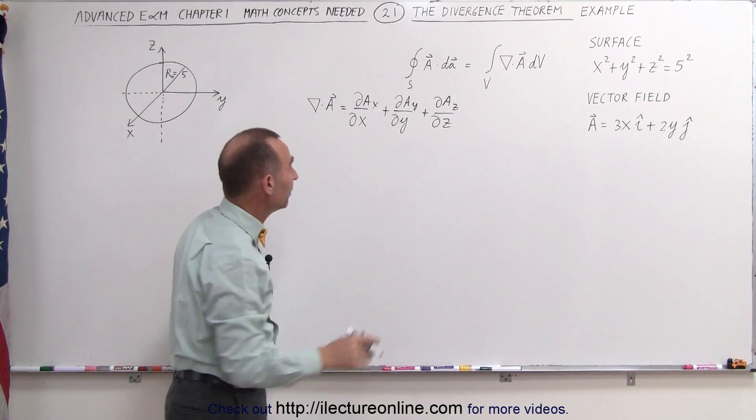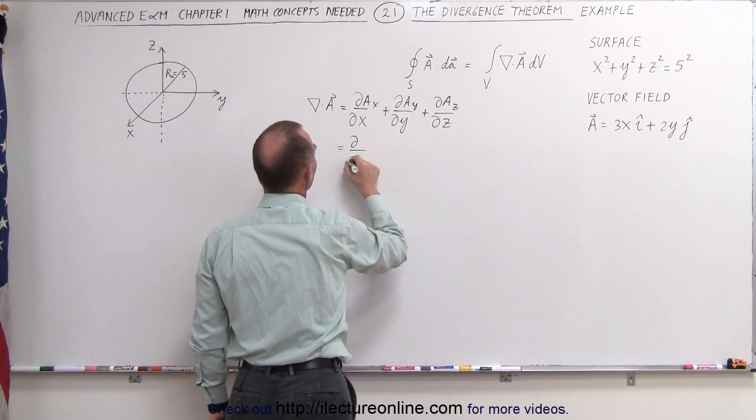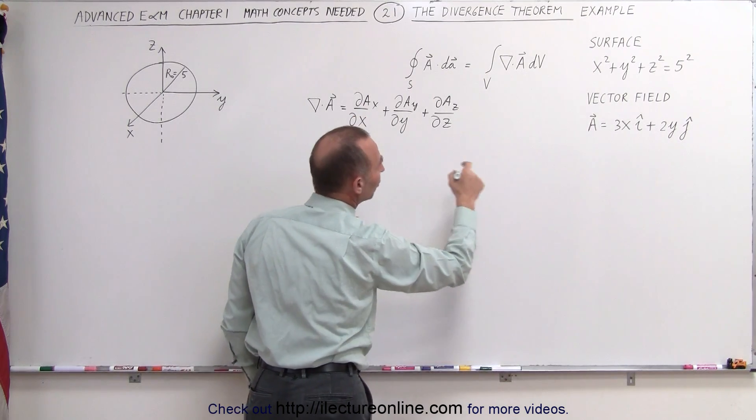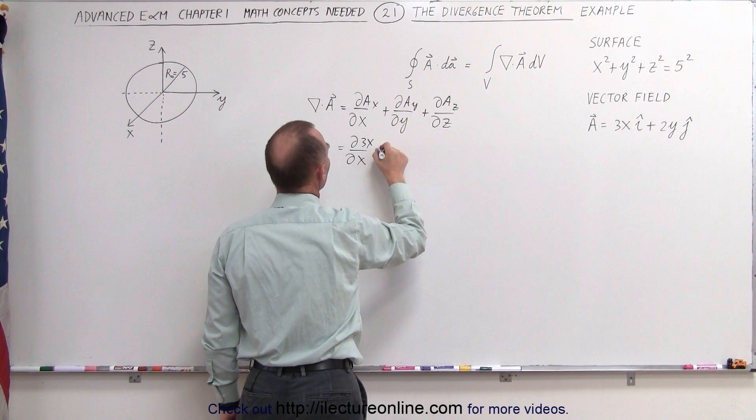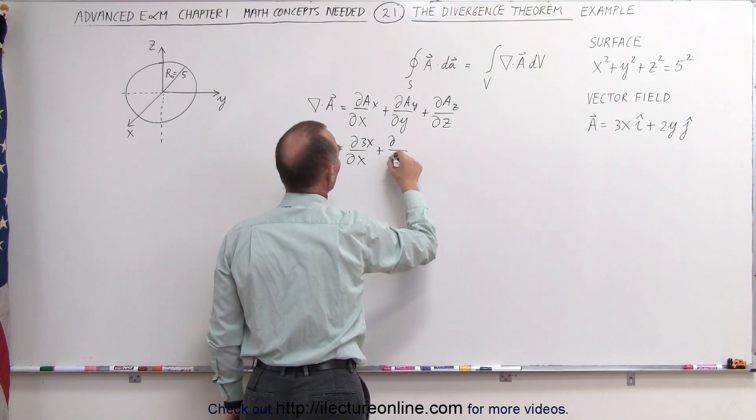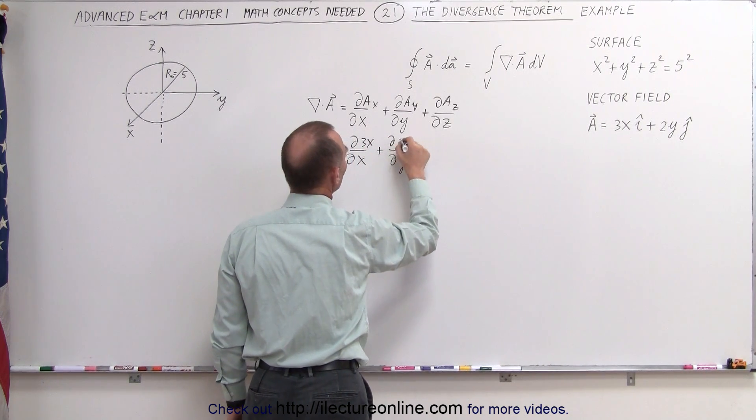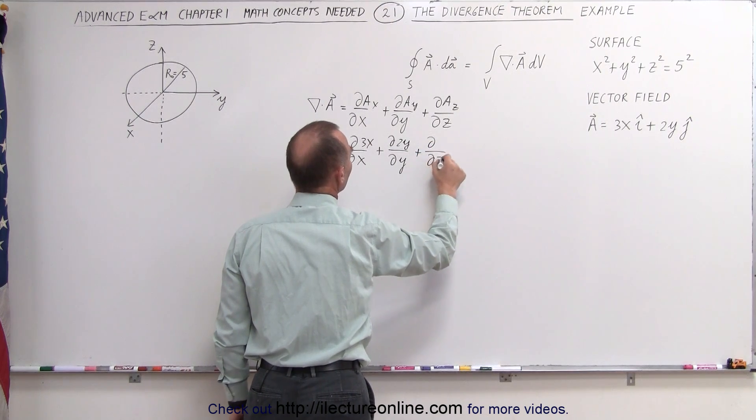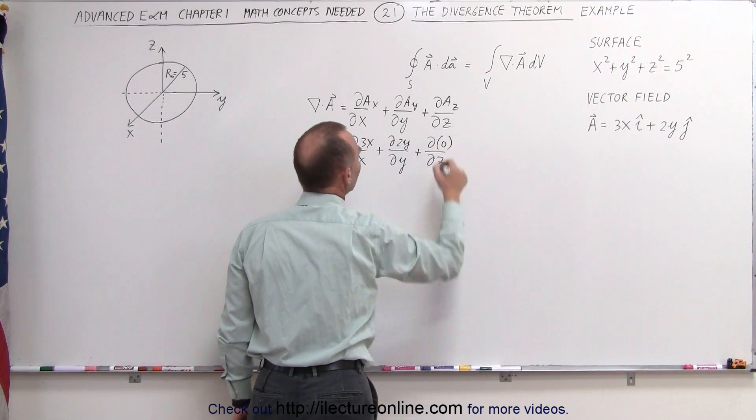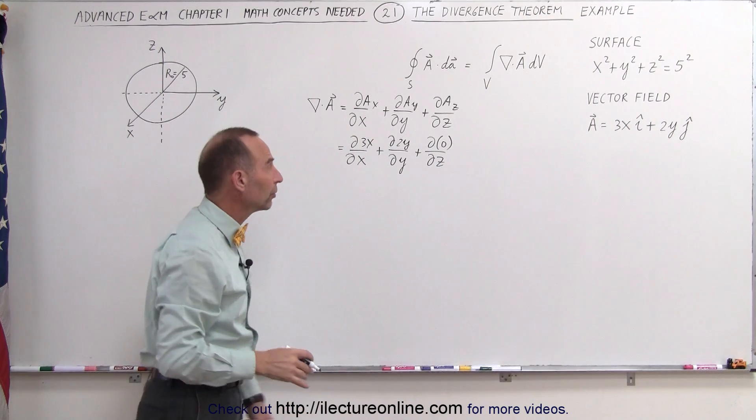Plug in what those are. This is equal to the partial with respect to x of the x component, which is 3x, plus the partial with respect to y of the y component, which is 2y, plus the partial with respect to z of the z component, and that would be 0, so that term will automatically go to 0.